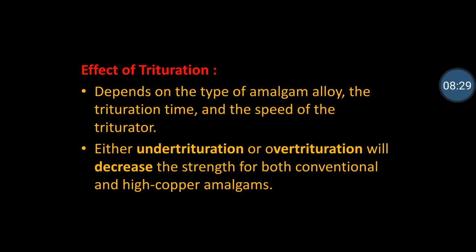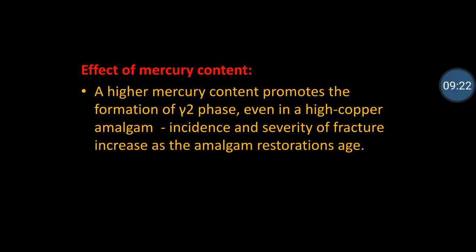Several factors influence amalgam strength. First, trituration: depending on alloy type, the duration and speed of trituration matters. Both under-trituration and over-trituration will decrease the strength of both low-copper and high-copper amalgams. Irrespective of amalgam type, proper trituration is essential — it should be neither under-titurated nor over-titurated.